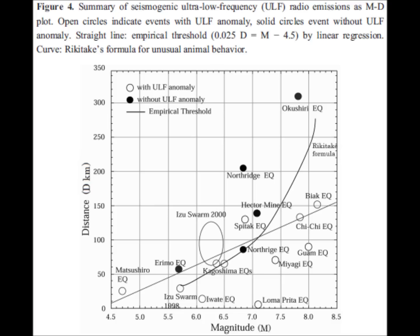In terms of timing for ULF, the first enhancement appears about one to two weeks before the earthquake and lasts for about a week. It then quiets down slightly for a few days, followed by a large increase a couple of days before the earthquake, and then the most abrupt increase right before the earthquake.